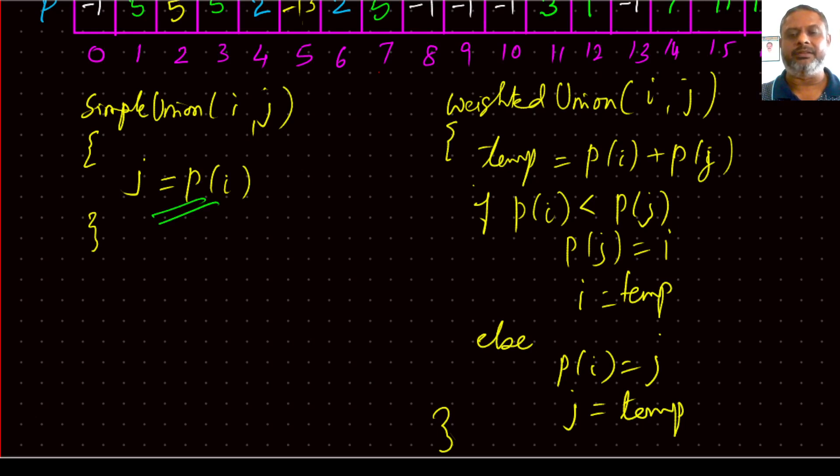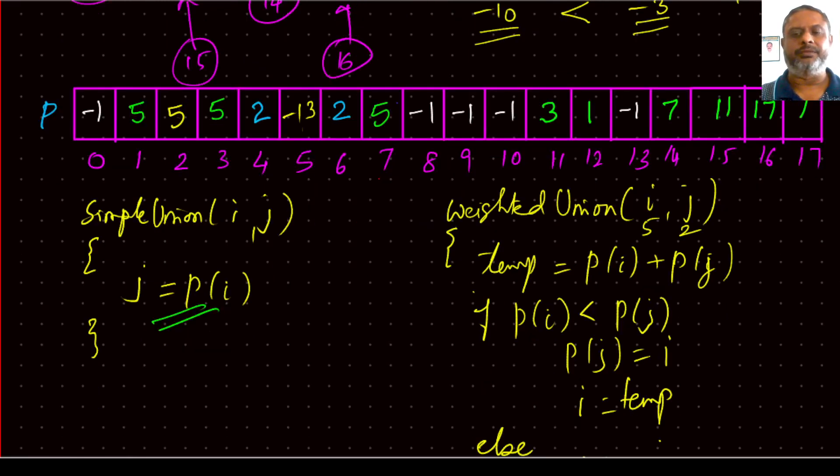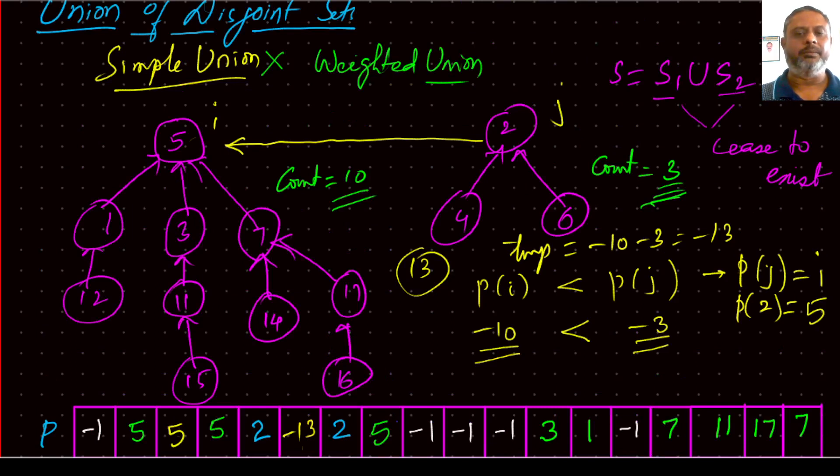So the number of nodes in i are greater than number of nodes in j. Therefore, p of i is less than p of j. In that case, j should be connected to i. So parent of j should be made equal to i. So that's what we did. i was 5, j was 2. So parent of i, the p of i was minus 10. And p of j was minus 3. So this condition is true. Therefore, p of j, j is 2. So at location 2, we have written i, i is 5. And then at location i, which was minus 10, minus 13 is written here.